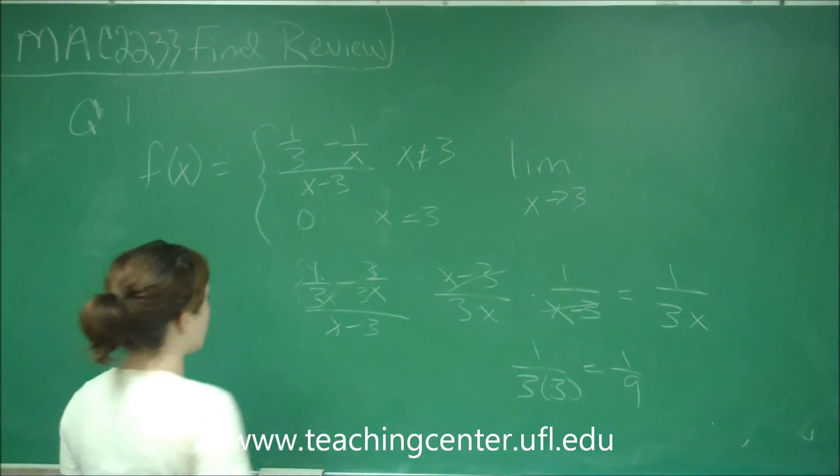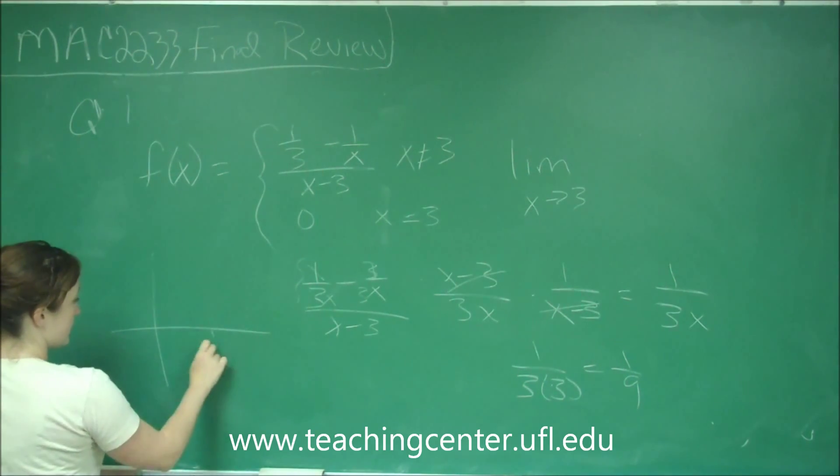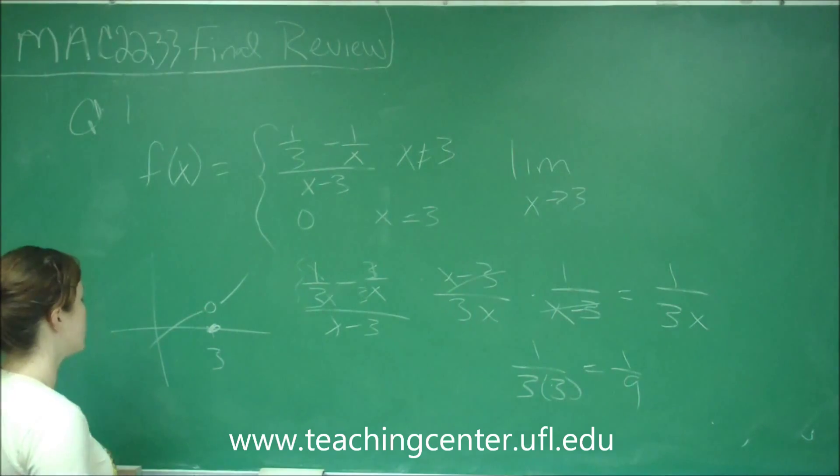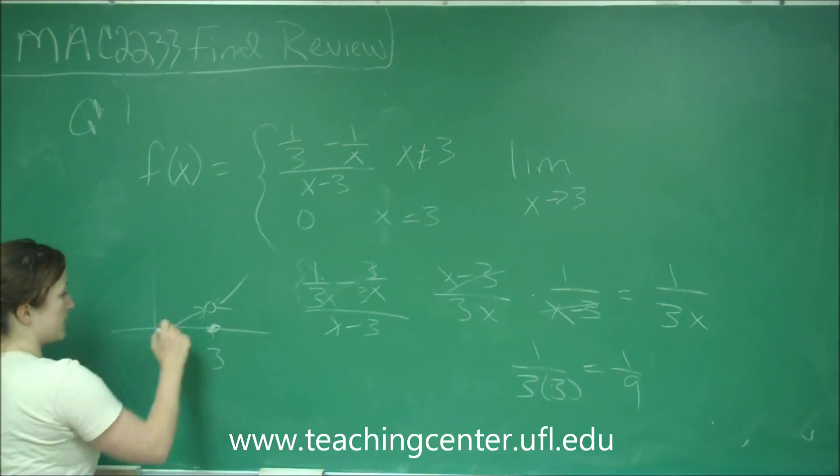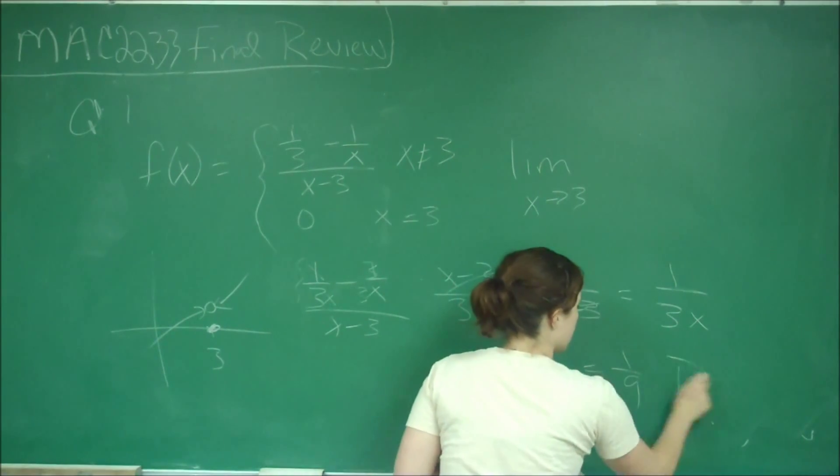And we don't plug in 0 because what this function is doing, whatever it looks like at 3, it's defined at 0 but it's going up obviously to some value of 1 ninth. And so that's what we want, the limit as it's approaching it. So your answer is 1 ninth, which is B.